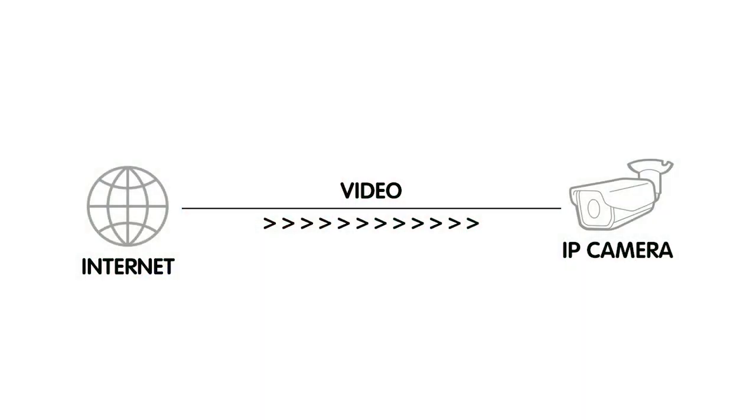An IP camera is a network-based surveillance solution that uses digital video cameras to capture and transmit video footage over an IP network. It offers benefits including increased flexibility, scalability, and the ability to monitor your premises remotely.